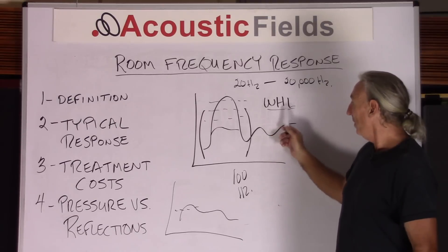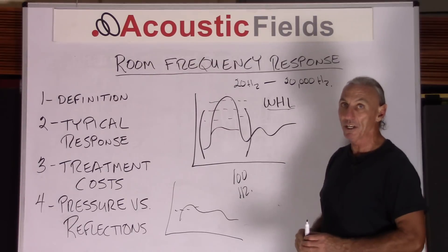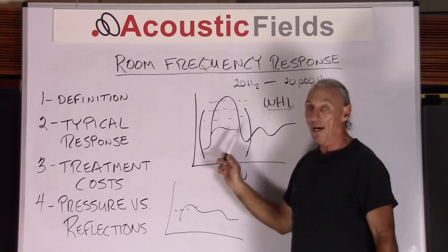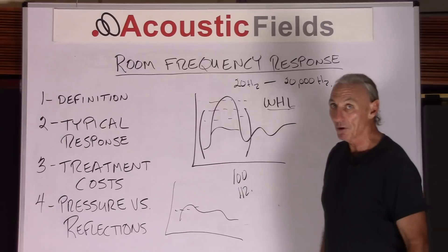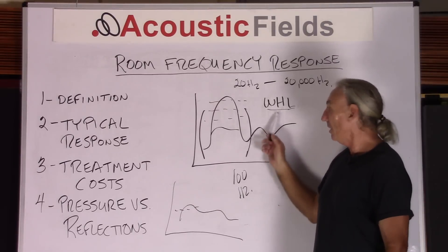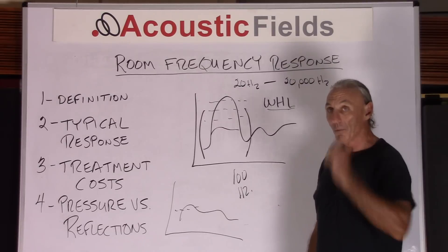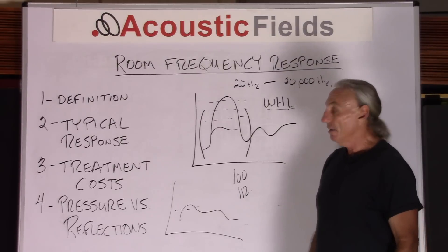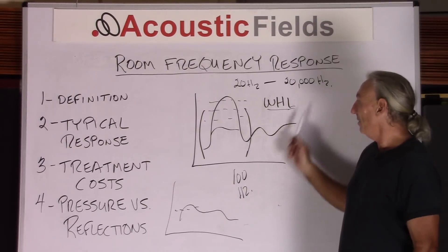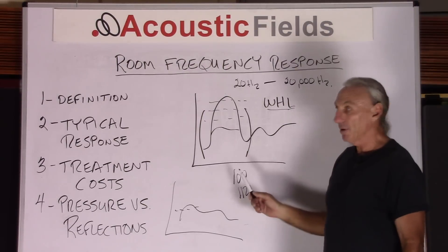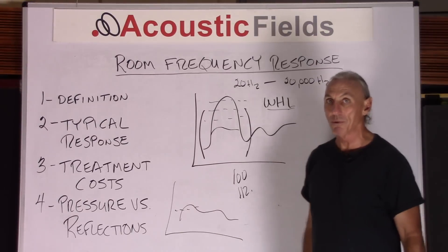So choose the right width, height, and length to get the best frequency response you can in the room, and what you don't get with room size and volume, we have to treat — and treatment costs money. If we choose our room ratios the best — and there's a whole series of ratios we'll go through in another video — choose the right ratio of width, height, and length, minimize that low frequency bump, cut your treatment cost, and when you do treat, treat with the right technology.